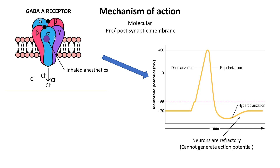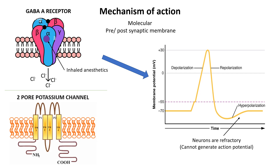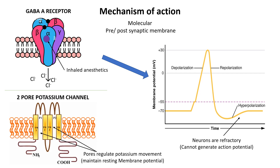Another important channel involved is the two-pore domain potassium channel. They are a family of background or leak potassium channels that help regulate the resting membrane potential and neuronal excitability. Inhalational anesthetics have been shown experimentally to enhance the activity of these channels, leading to hyperpolarization of the plasma membrane. Again, the detailed explanation of these receptors and channels is beyond the scope of this video.